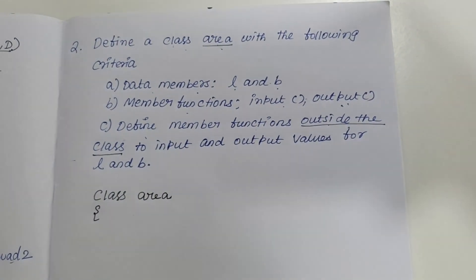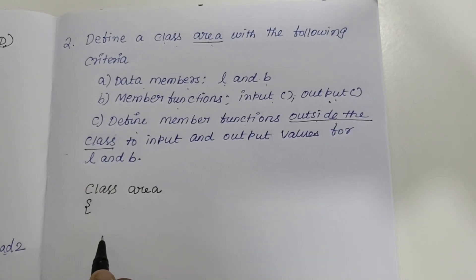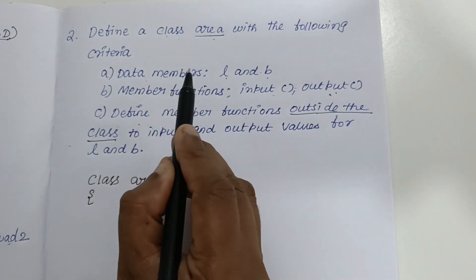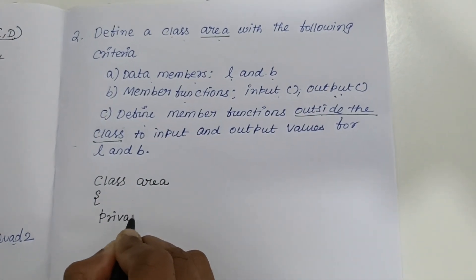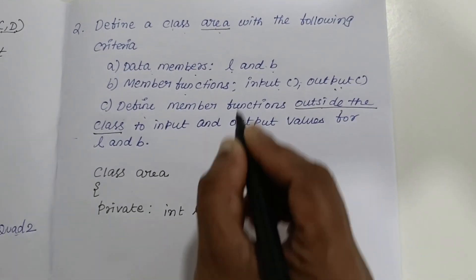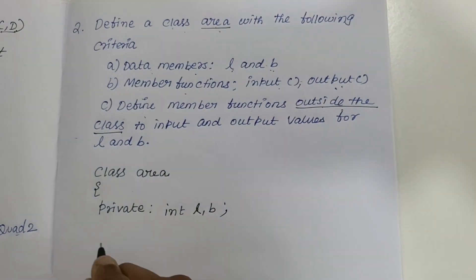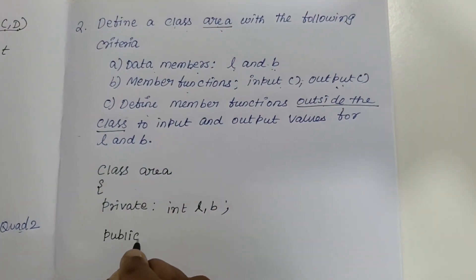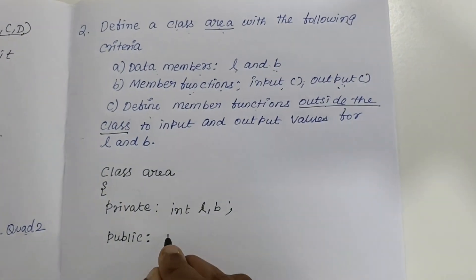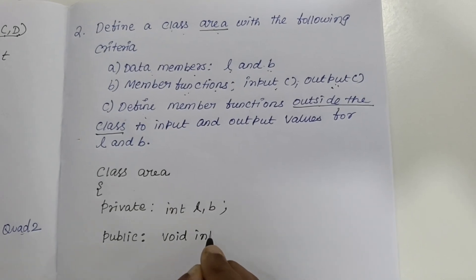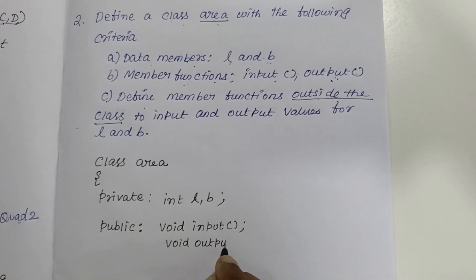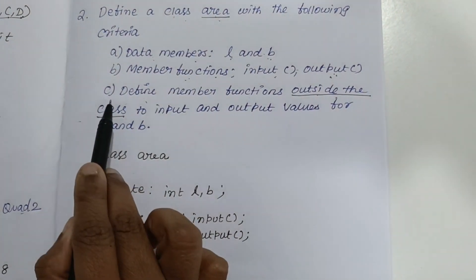After that, open the class with a flower bracket. We need to mention two access specifiers. In private, we always mention the data members — here the data members are l and b, so write: int l, b; Next is public, where you mention the member functions. The member functions are the input function and the output function, so write: void input and void output.